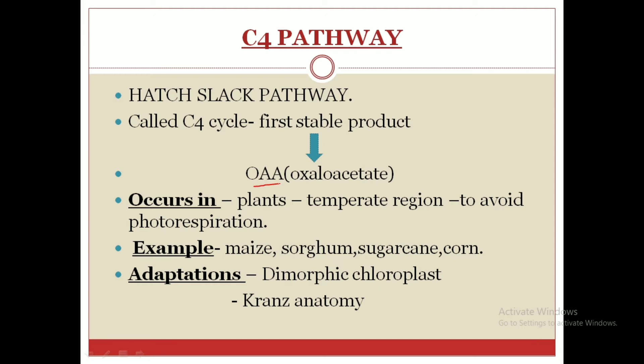This cycle mainly occurs in plants of the temperate region — for example maize, sorghum, sugarcane, and corn. This pathway is mainly adapted by plants in order to avoid photorespiration, about which we have already discussed in the previous video.